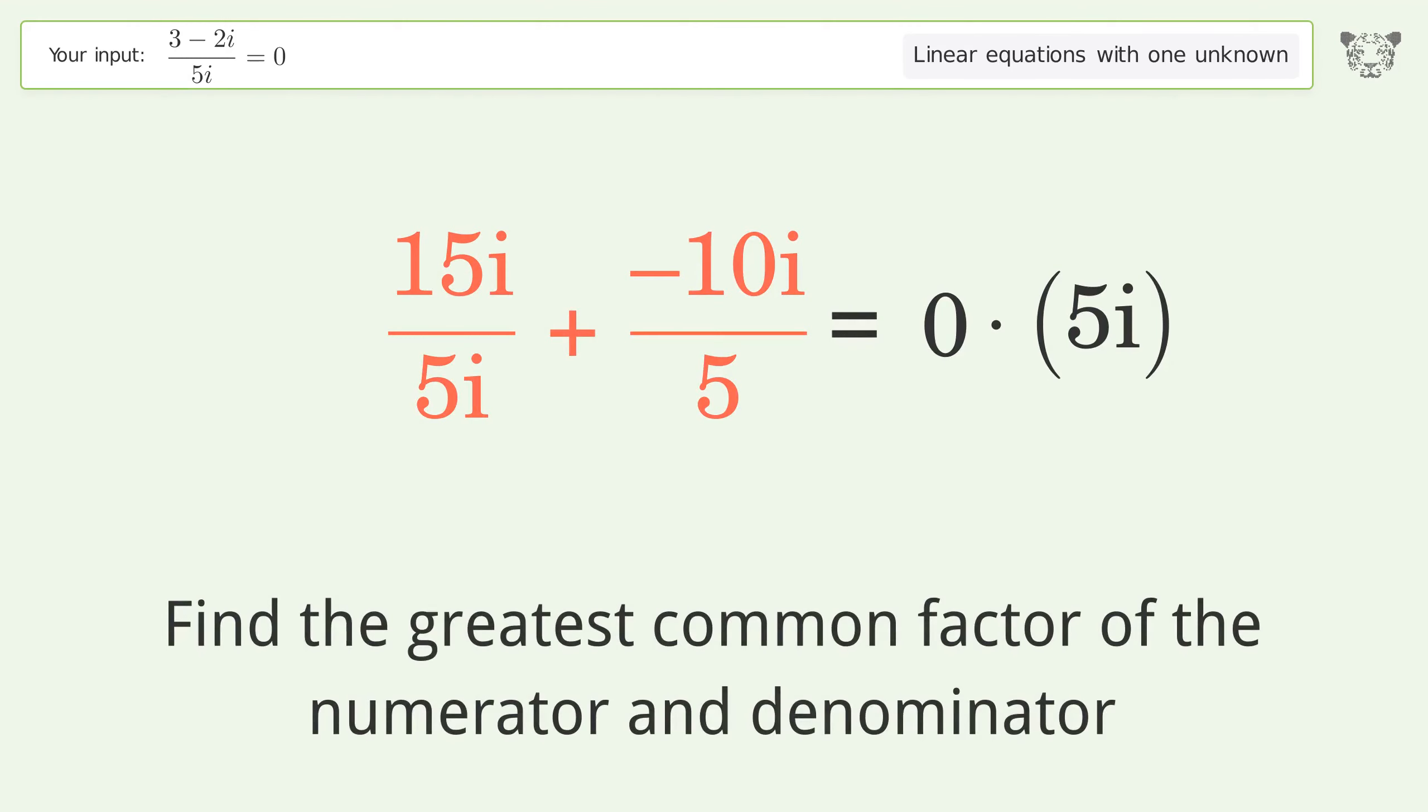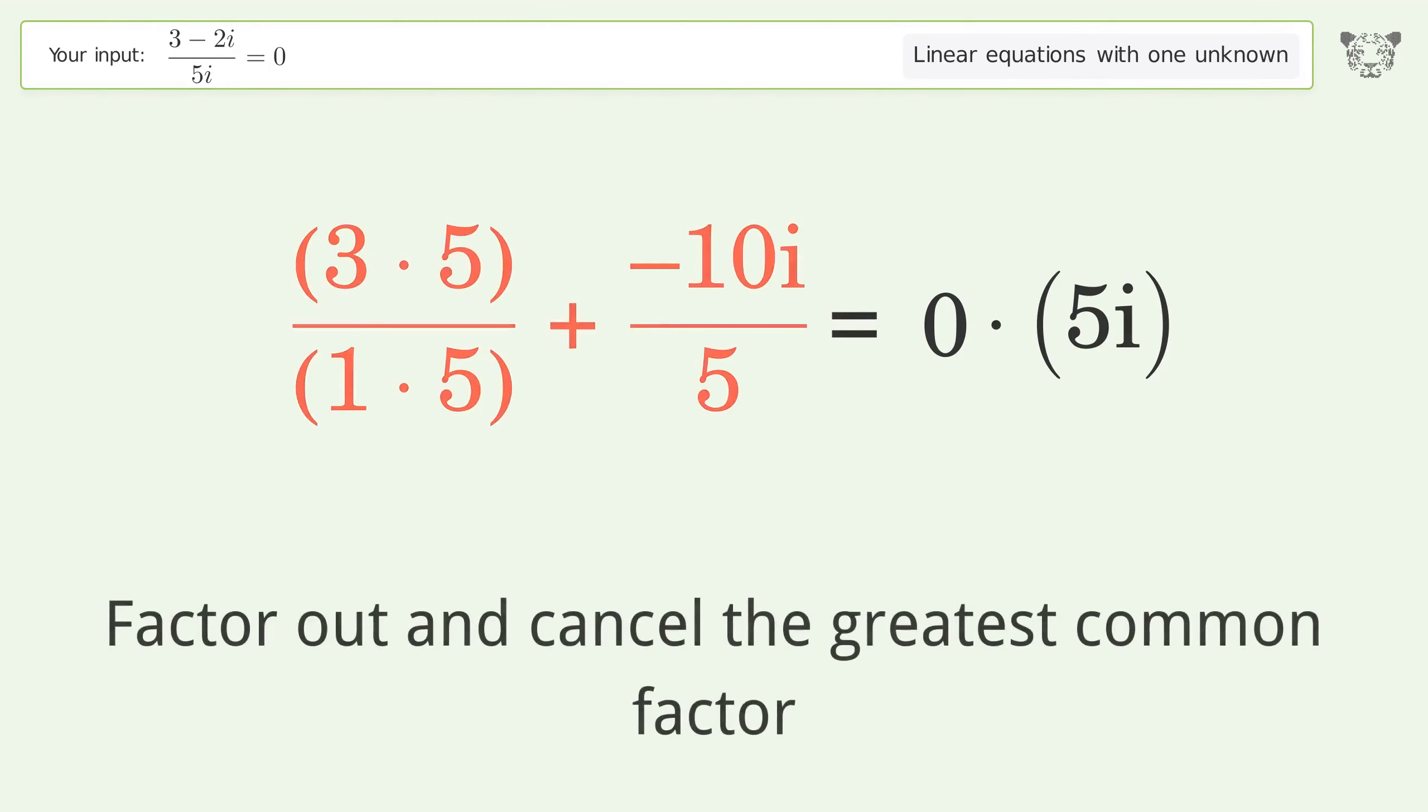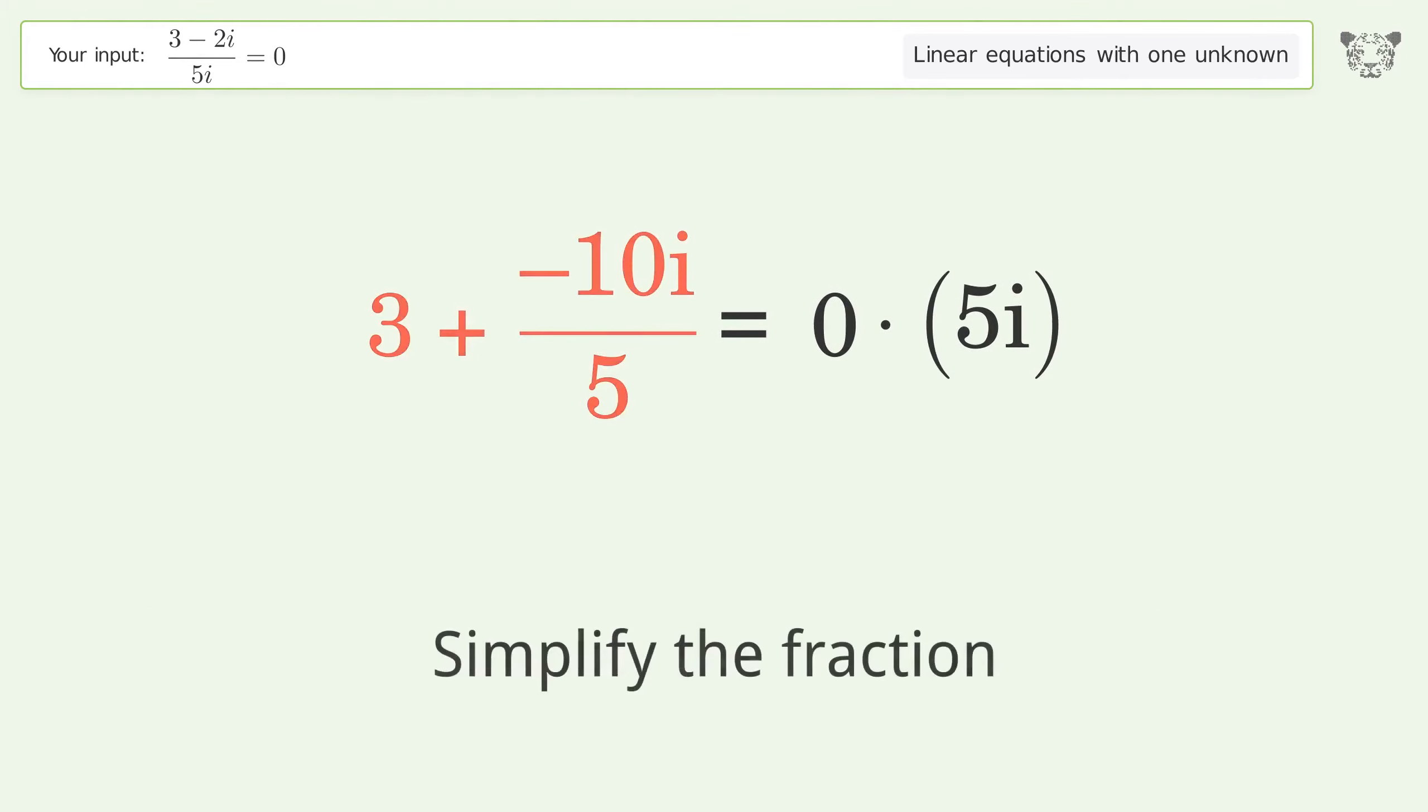Find the greatest common factor of the numerator and denominator. Factor out and cancel the greatest common factor. Simplify the fraction.